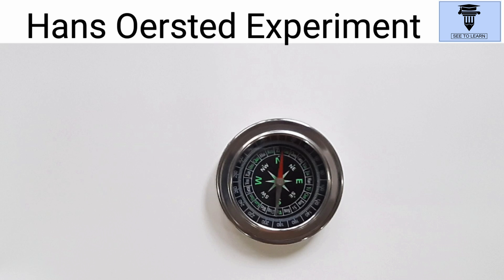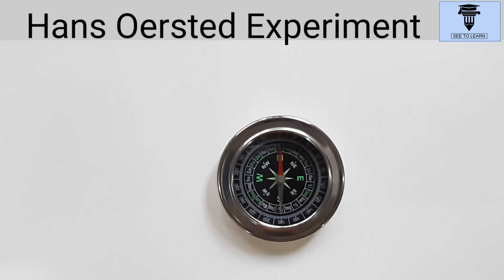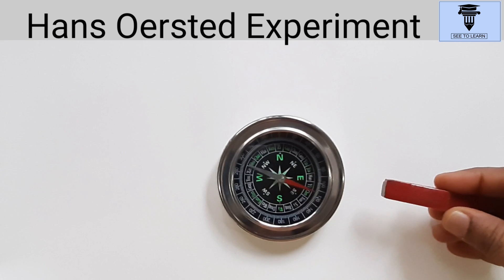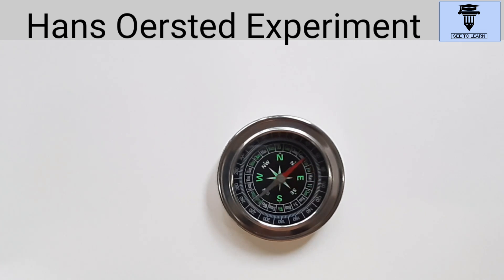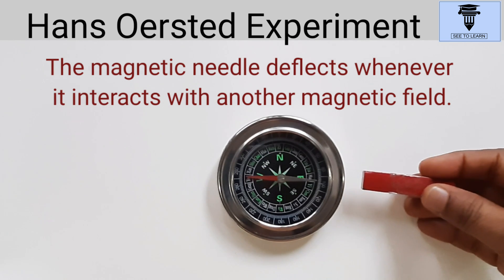You all know that the needle of the compass always points in the north-south direction. But see what happens when a magnet comes near it - the needle of the compass deflects. The magnetic needle deflects whenever it interacts with another magnetic field.